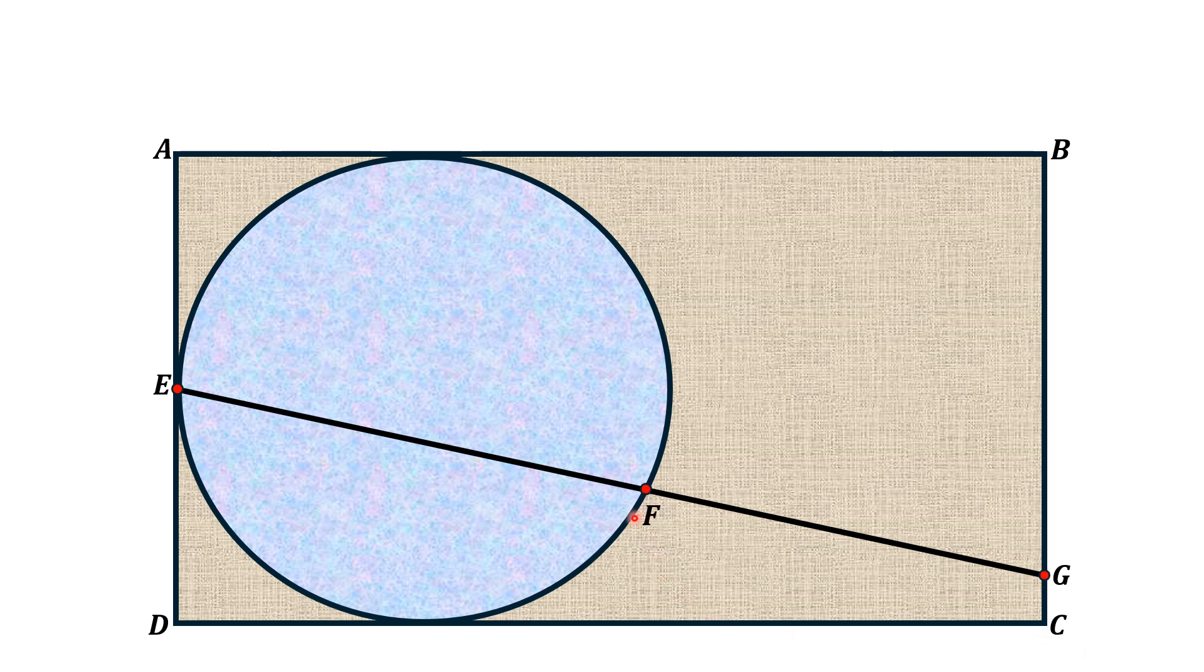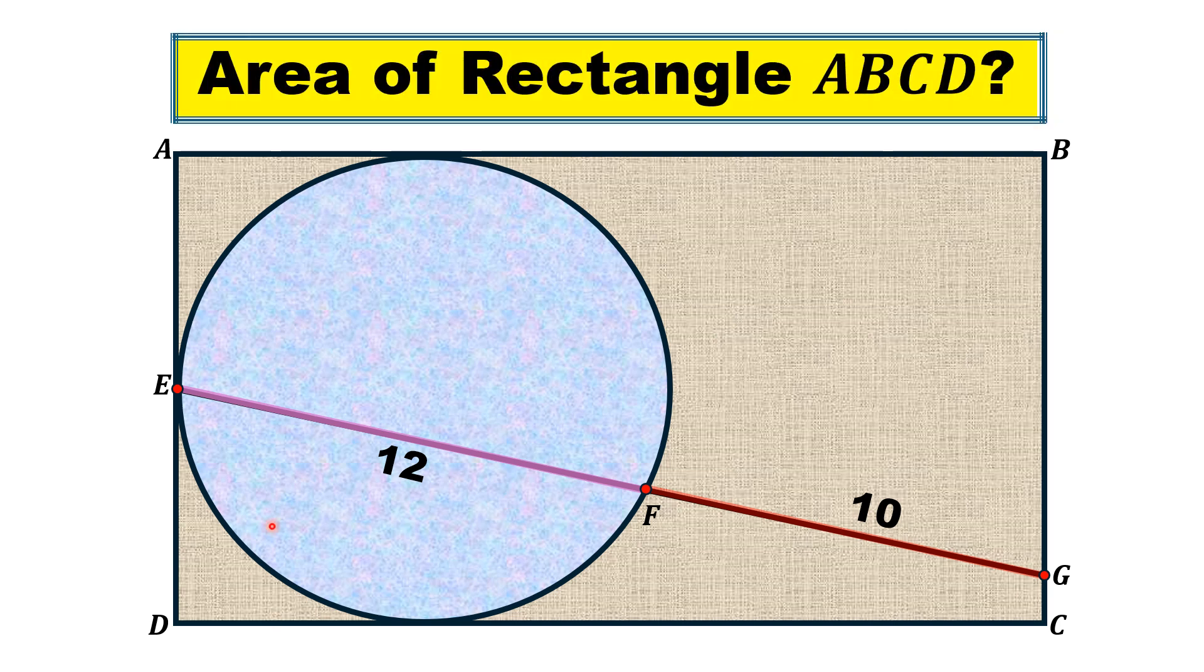Let the length EF be 12 units and FG be 10 units. Then by this limited data we have to find the area of rectangle ABCD. Let us move towards the solution.